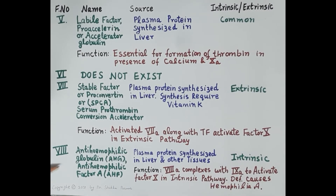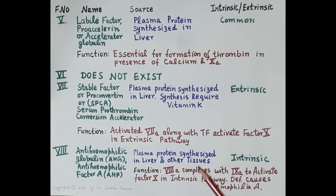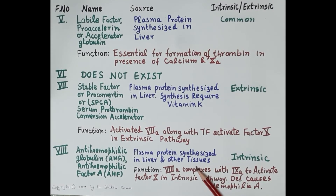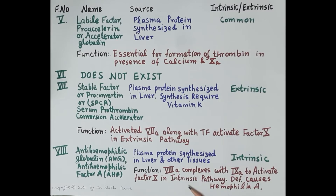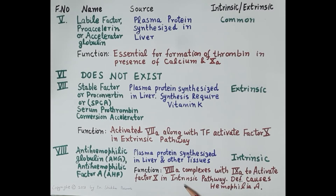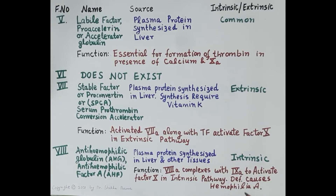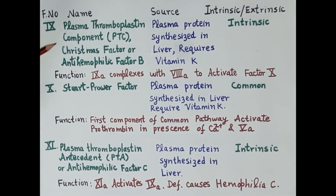Clotting factor 8 is also termed anti-haemophilic globulin or anti-haemophilic factor A. It is a plasma protein synthesized in the liver and other tissues, and it is essential for the intrinsic pathway. Clotting factor 8a complexes with 9a to activate clotting factor 10 in the intrinsic pathway. Deficiency of clotting factor 8 causes haemophilia A, which is a genetic disorder.